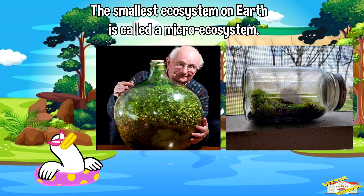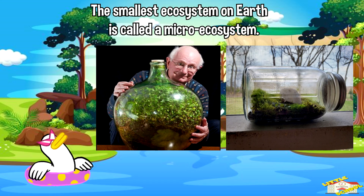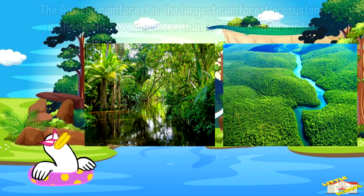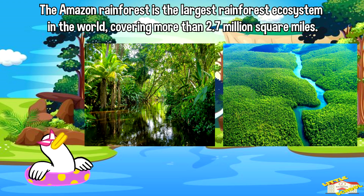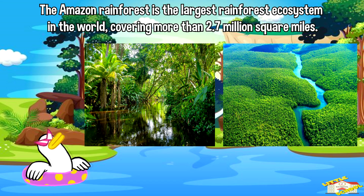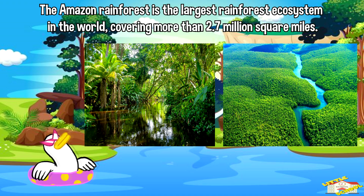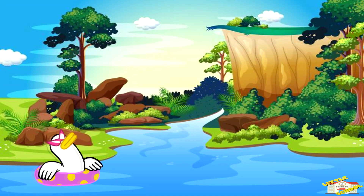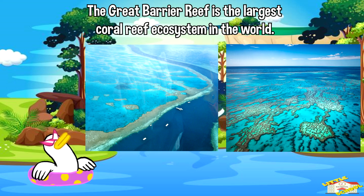The smallest ecosystem on Earth is called a micro ecosystem, which can be as small as a drop of water. The Amazon rainforest is the largest rainforest ecosystem in the world, covering more than 2.7 million square miles.